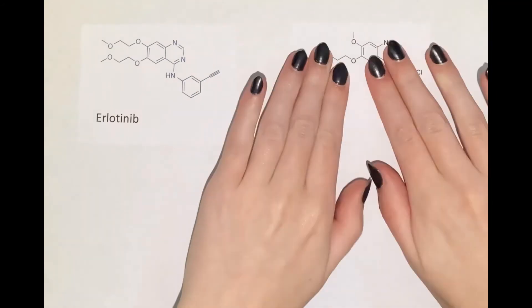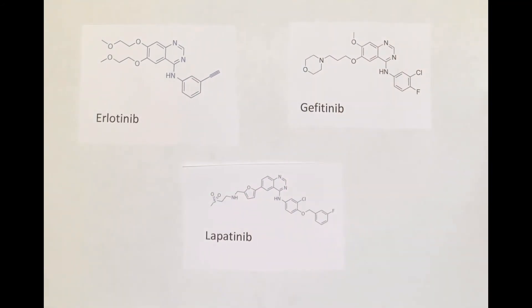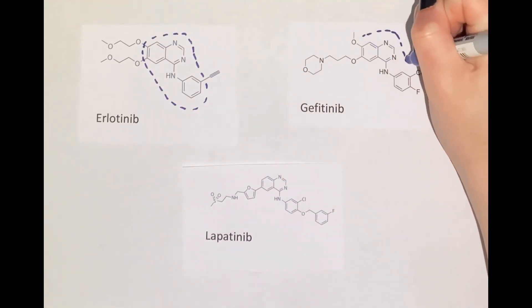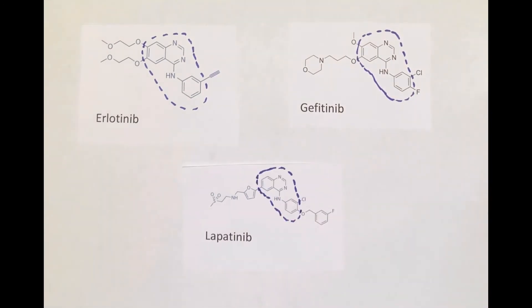Examples of these tyrosine kinase inhibitor drugs are erlotinib, gefitinib, and lapatinib. They are competitive inhibitors that bind to the kinase domain of EGFR, preventing autophosphorylation and thus the signaling pathway.